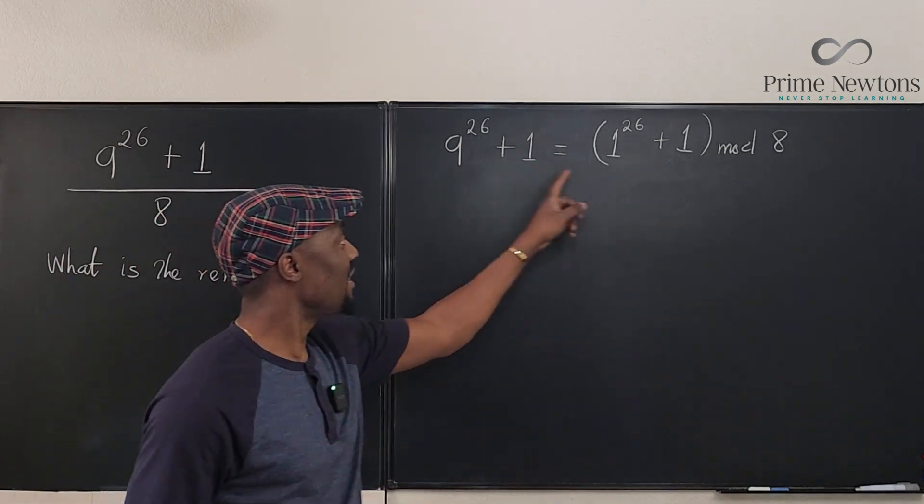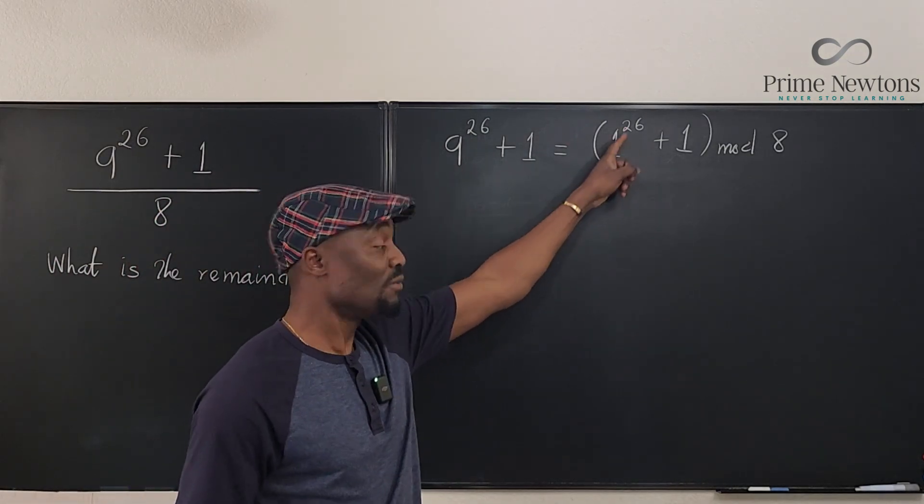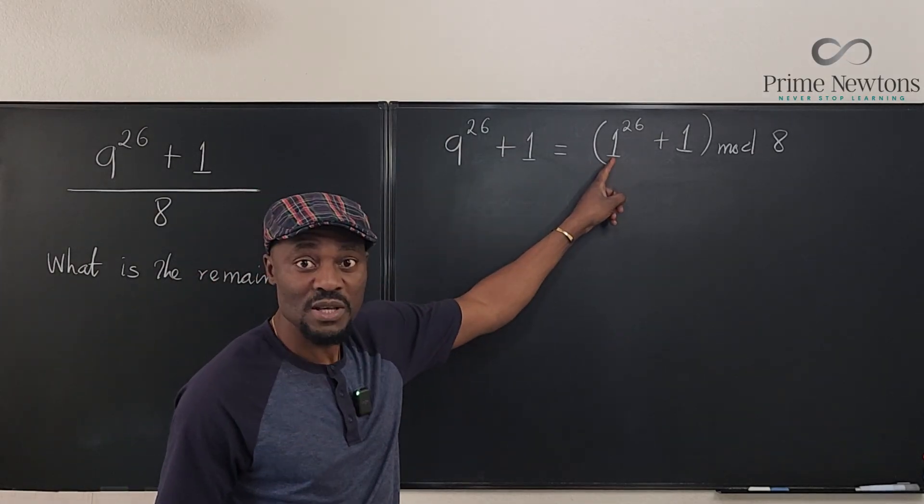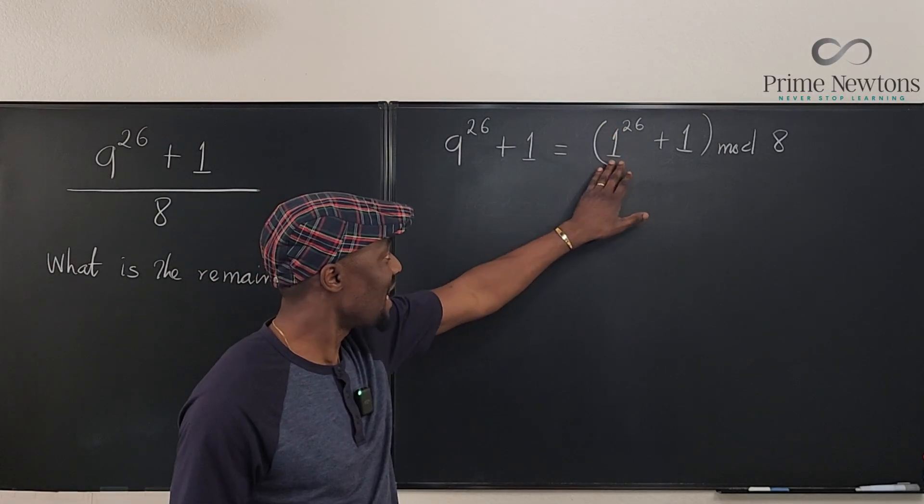So whatever number is here, you divide it by the modulus that you want to use and that remainder is there. You still raise it to power 26. Now if this was 10, you'll have 2 here and then you have to do the math by yourself.